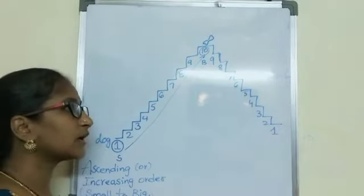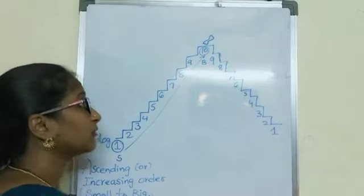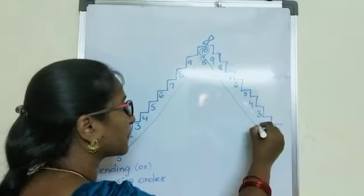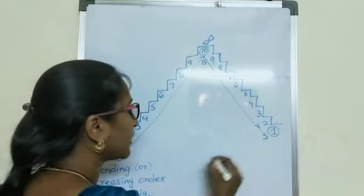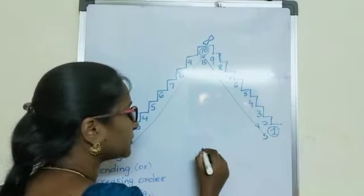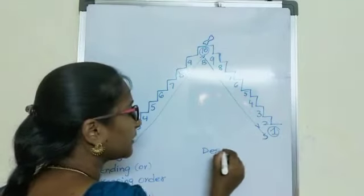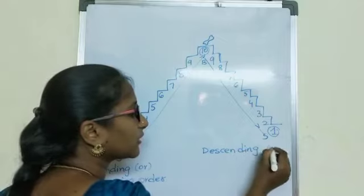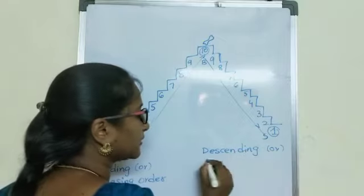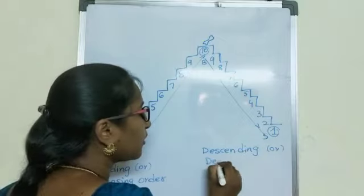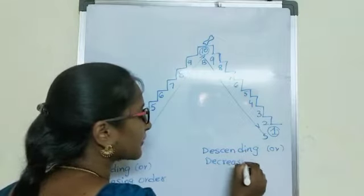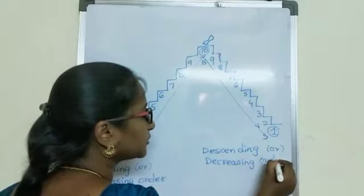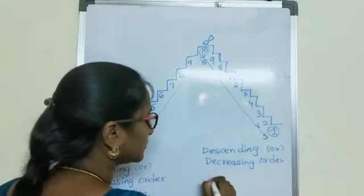So, the dog came from bigger number to smaller number. So, arranging numbers from bigger number to smaller number is called descending order or decreasing order. That means big to small.